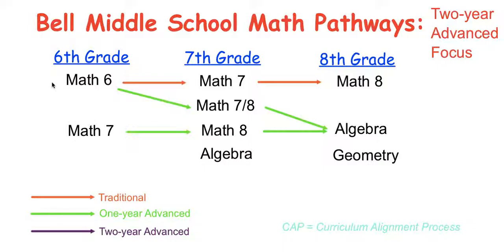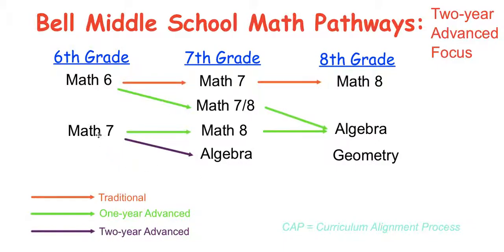What we're looking at is that in 6th grade, you would be coming in at the Math 7 level. From Math 7, depending on end-of-year progress, test scores, and teacher recommendation, there is an opportunity to skip up to Algebra. And I say skip because the natural progression would be Math 8. The CAP that you're going to be skipping is the year Math 8 — you're going to be missing the entire 8th grade year of Math.